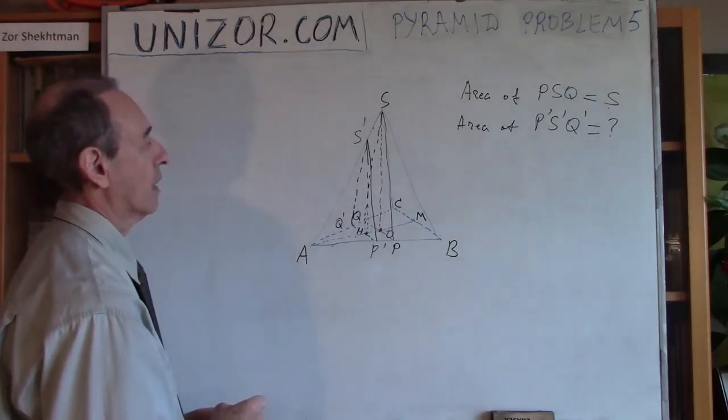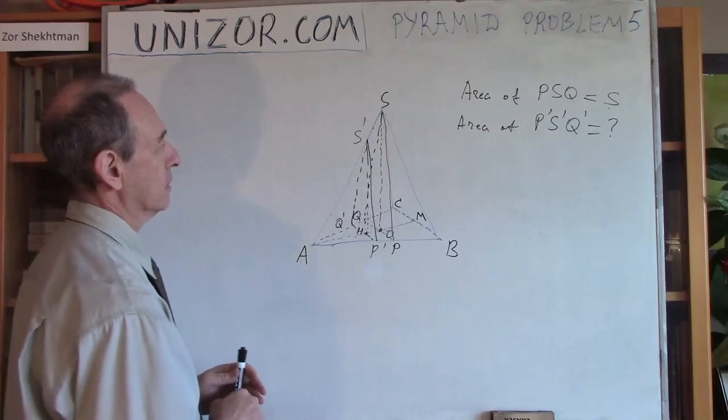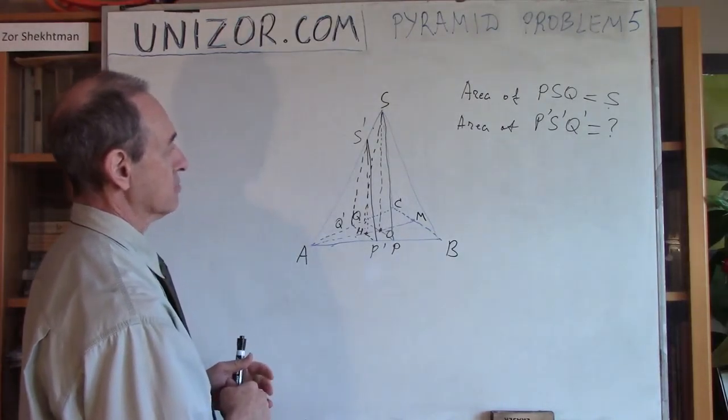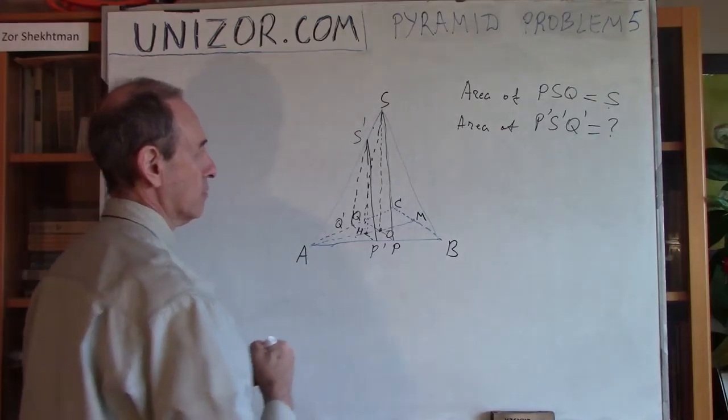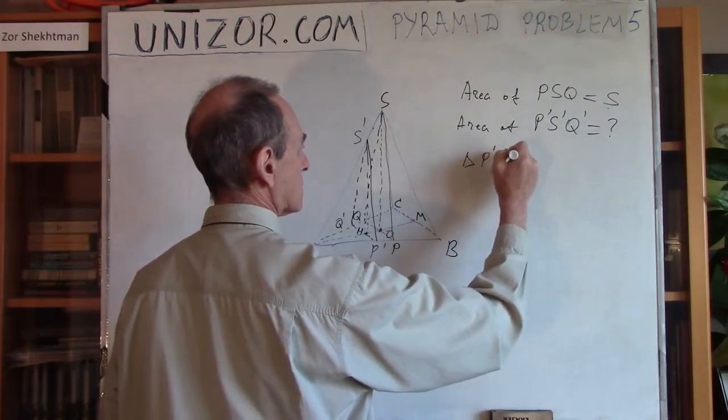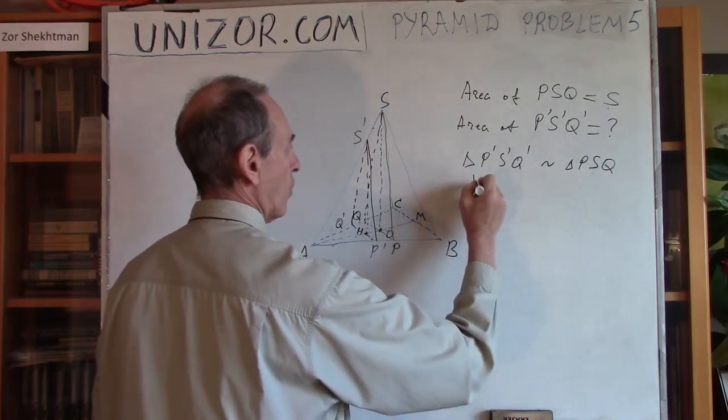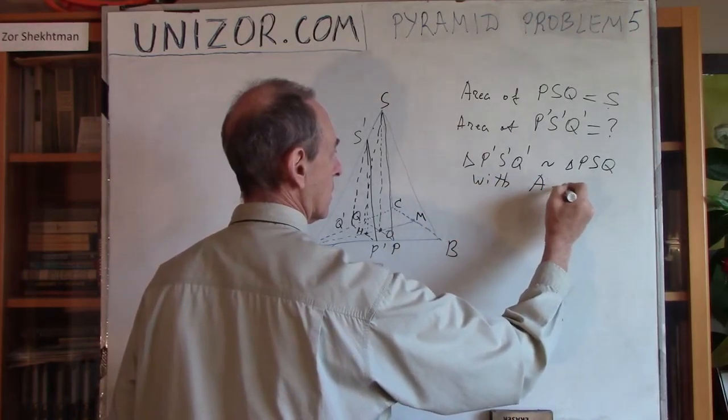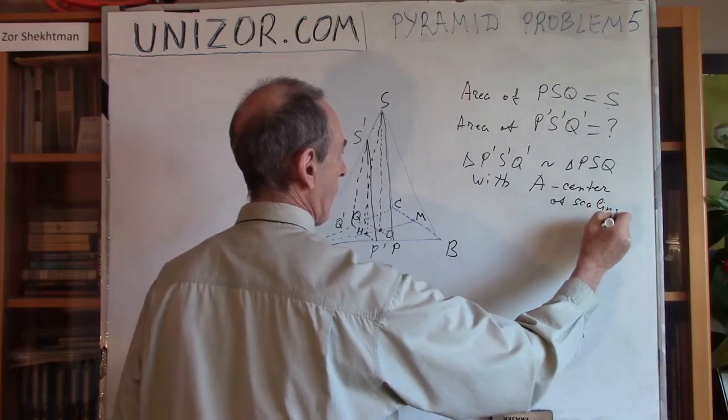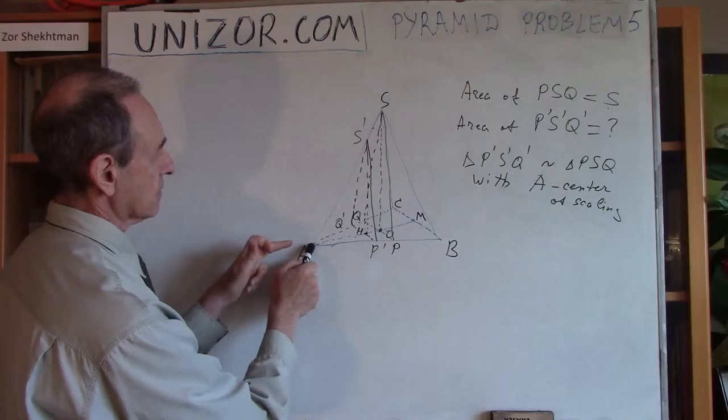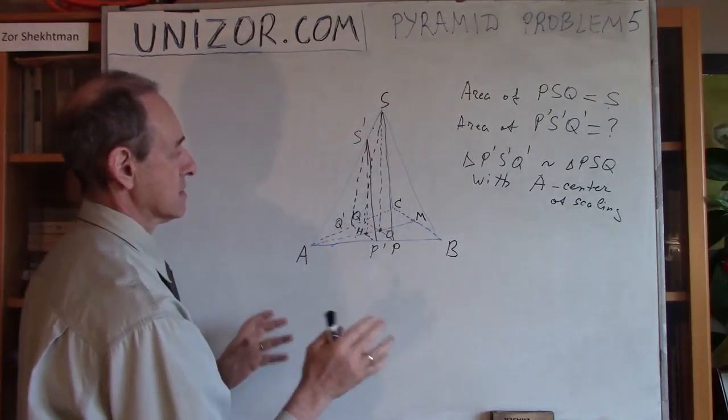Alright. Now, let's think about it. We all remember what similarity in 3D is. What I'm talking about right now, why am I talking about similarity? Because, obviously, you can consider triangles P prime S prime Q prime similar to triangle PSQ, with A as the center of scaling.